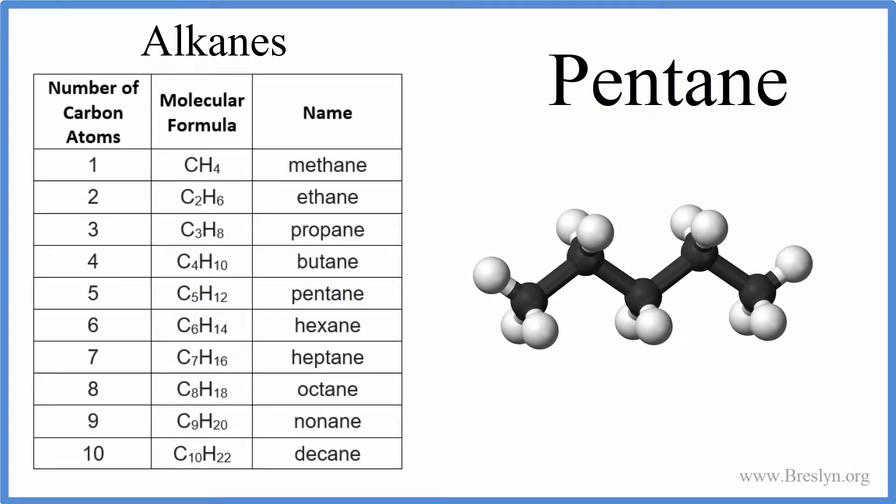So we could write the structure here. In pentane, we have one, two, three, four, five carbons. And around each of the carbons, we have hydrogens. For pentane, each carbon, if we looked at the molecular geometry with respect to the atoms around it, would be tetrahedral. So that's the structure for pentane.